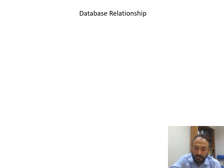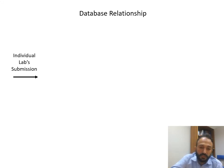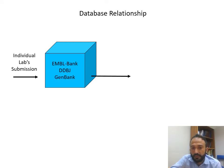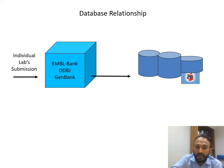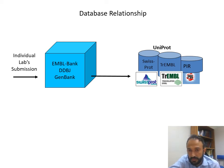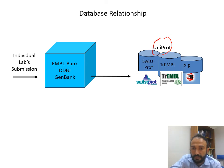To clarify what these databases do: all information from any lab submission or individual experiment is first stored in EMBL Bank (a DNA database), or in DDBJ (DNA Data Bank of Japan), or in GenBank (part of NCBI). That information is then stored into SwissProt, which is manually annotated, and TrEMBL, which is automatically annotated, as well as PIR (Protein Information Resource). These are DNA sequences converted into protein sequences, with each database having different features.